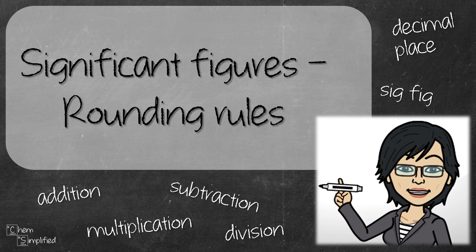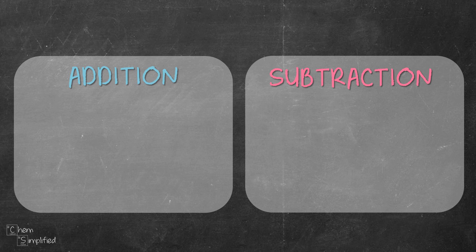In this video, we'll go through the rounding rules for significant figures when performing calculations like addition, subtraction, multiplication, and division. The rule for addition and subtraction is to round off following the lowest decimal place. Decimal place refers to the number of digits after the decimal point.